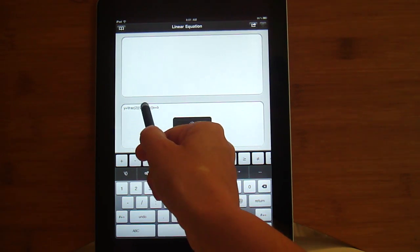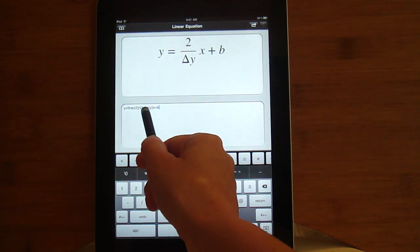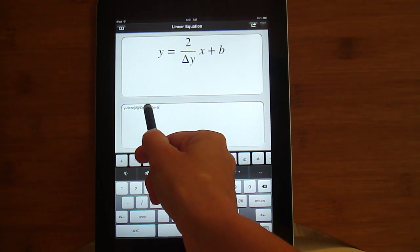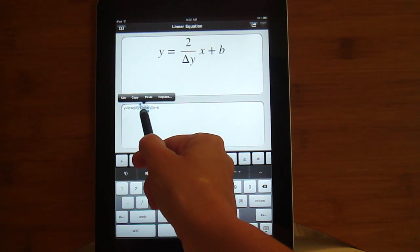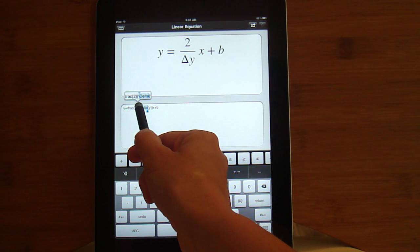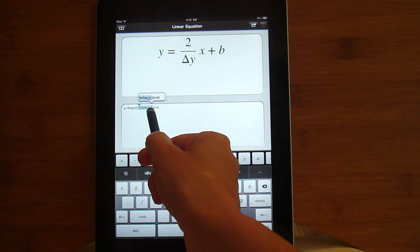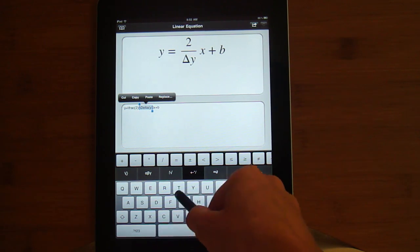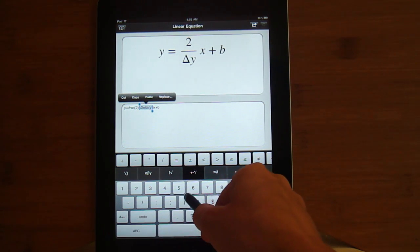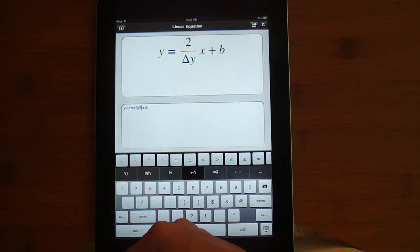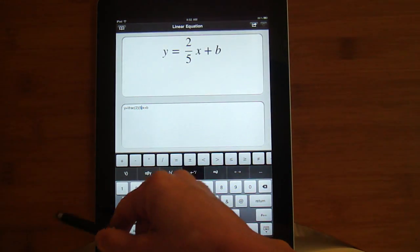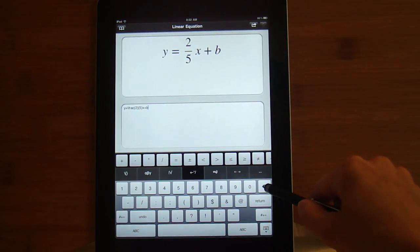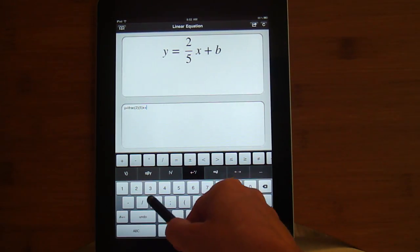I'm going to change the delta y. Now I have to get the backslash in front of the delta and the y in braces. I'm going to change that to a 5, and I'm going to change my y-intercept to a 4.